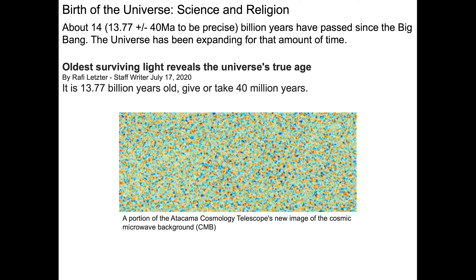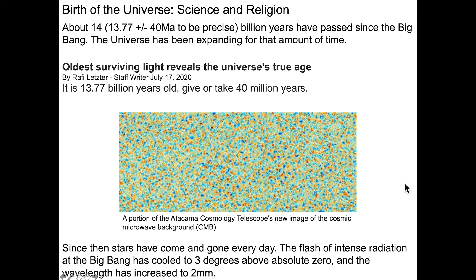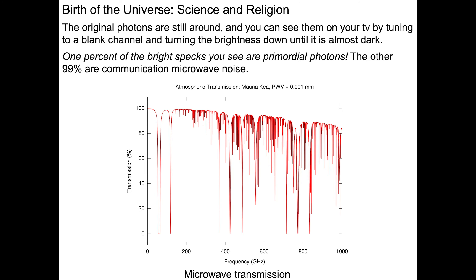This is a portion of the Atacama Cosmology Telescope's image of cosmic microwave background radiation — radiation at about a two-millimeter wavelength that was initiated at the beginning of the universe. This flash of radiation from just after the Big Bang has now cooled to three degrees above absolute zero. With this cooling comes an increase in wavelength, so we're now at this two-millimeter wavelength, which is microwave radiation.